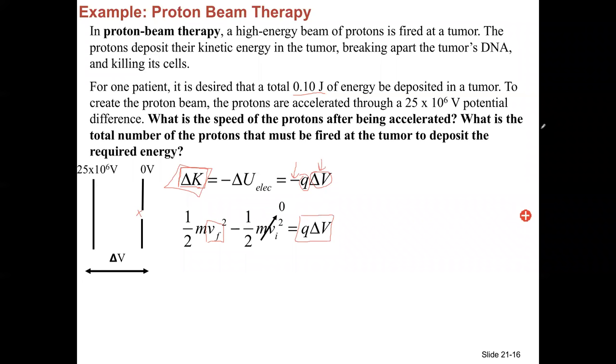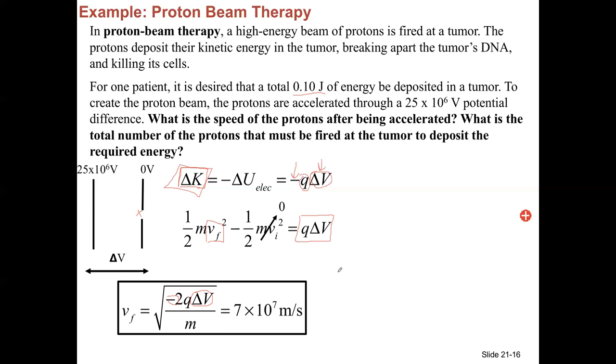Alright, some answers filtering in here. It says 6.9 times 10 to the 7, round up to 7 times 10 to the 7. I got similar things. So the speed is around 10 to the 7 meters per second, which is really fast. If you think the speed of light is 3 times 10 to the 8 meters per second, these protons end up with around 7 times 10 to the 7 meters per second, rounding. That's more than 10% the speed of light, so they're moving really fast at this tumor.